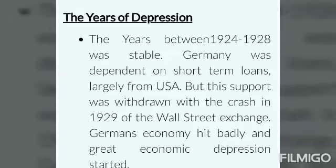The year of depression: The Great Economic Depression after the First World War caused a sharp fall in demand for essential goods. Farmers, traders and industrialists were severely affected. Even America could not escape — the Wall Street exchange crashed in 1929. Germany's investment and industrial recovery were totally dependent on the USA. Between 1929 and 1932, the national income of the USA fell by half, and the effects of this recession were felt all over the world. In Germany, industrial production was reduced to 40% of its 1929 level by 1932.